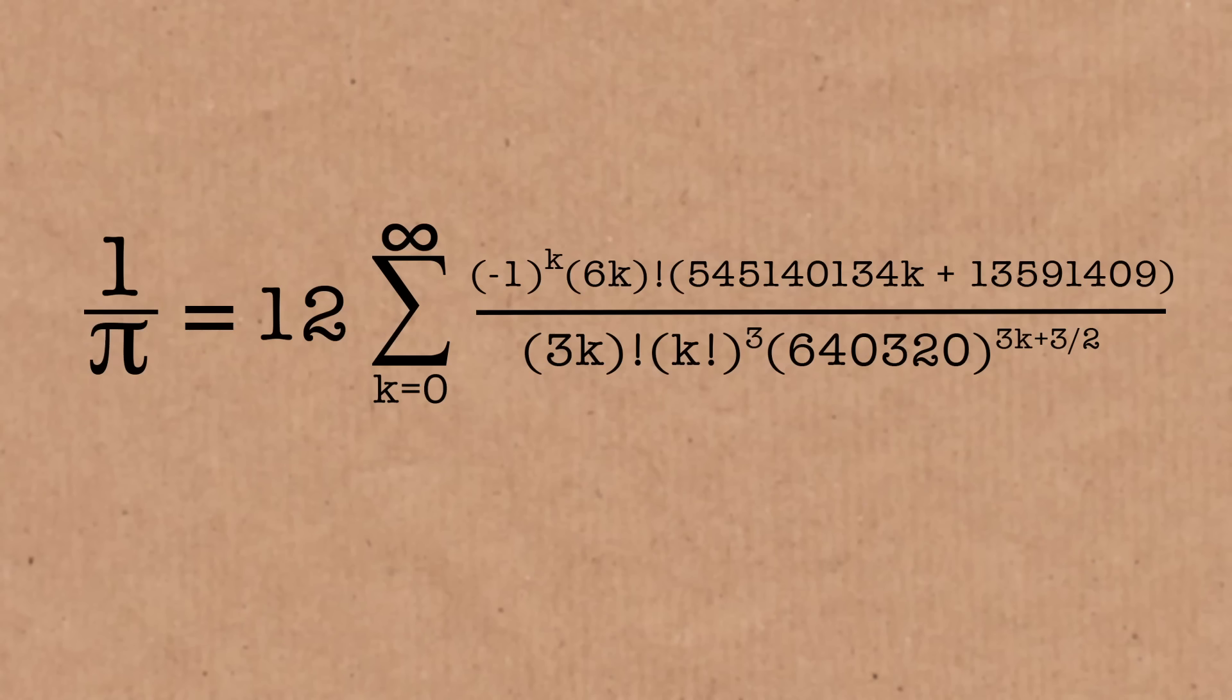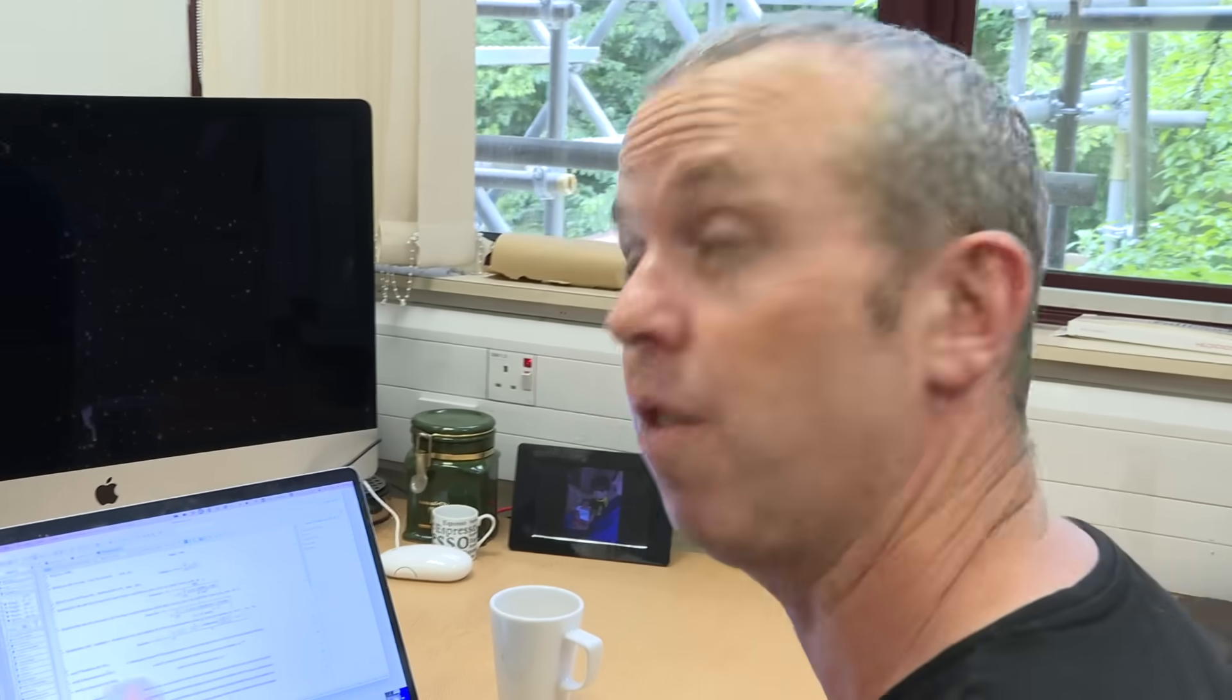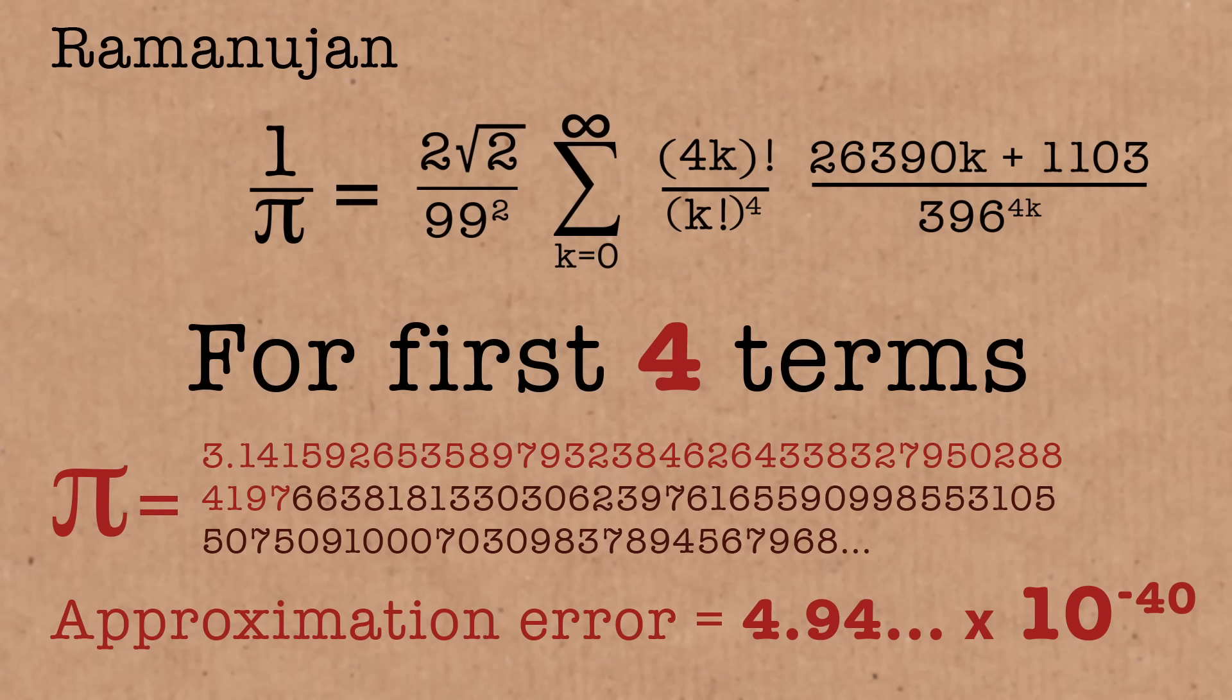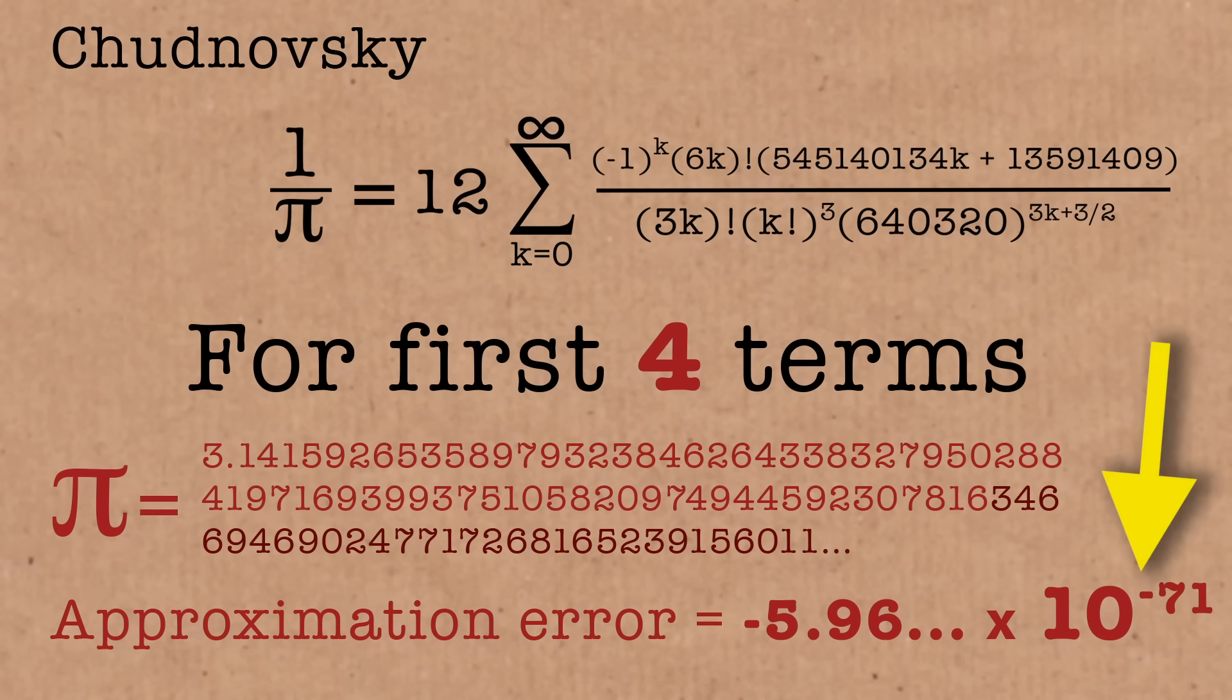So this is the Chudnovsky formula. This is state-of-the-art, this is the one they're using now when they're trying to calculate Pi to loads and loads of decimal places, when somebody's computer scientist does this on a supercomputer. So recently they set a record for this, they calculated Pi to 105 trillion decimal places, and they were using the Chudnovsky formula to do that. Ended in a six, last one was a six by the way. But just, we go back to my little computer code. We can see how powerful Chudnovsky formula is. So again, taking the first four terms for Madhava, we got to within about 0.2 of Pi. For Ramanujan, we got massively into 10 to the minus 40. Chudnovsky, just check this out, within 10 to the minus 71 with just four terms. It's incredibly rapidly converging.